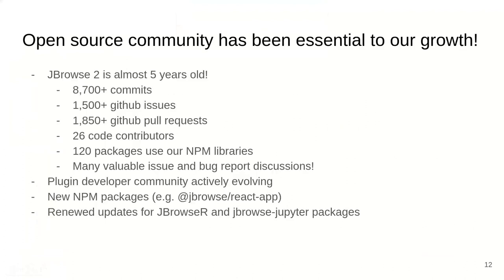I wanted to highlight that the open source community has been essential to our growth. JBrowse2 is almost five years old, with 8,700 commits and almost 4,000 issues and pull requests combined. We have 26 code contributors, plus many others who have filed issues and bug reports. We have an active plugin developer community, and we have renewed updates for our jbrowseR and jbrowseJupyter packages for use in computational notebooks — meeting analysts where they're working.